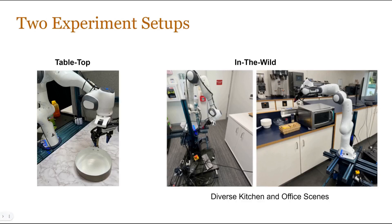For the experiments, we consider two different scenarios. The first is a tabletop setup, where we introduce different objects on a tabletop for the arm to manipulate. And in the in-the-wild evaluations, we drag a Franka Panda arm across diverse kitchen and office scenes and ask it to manipulate objects that are already present in those scenes.